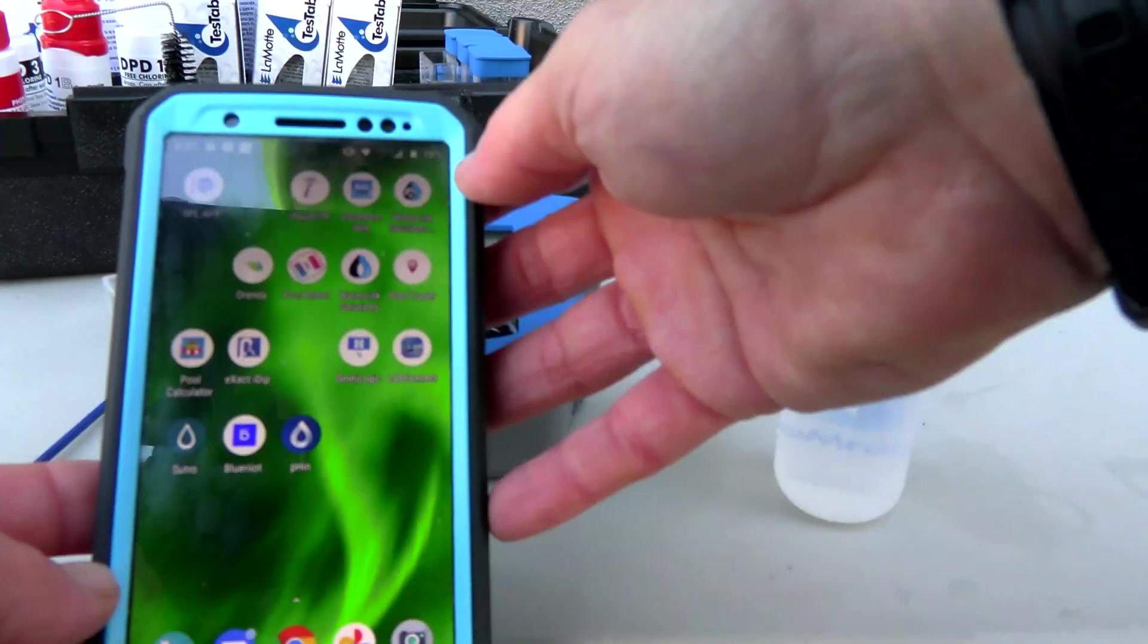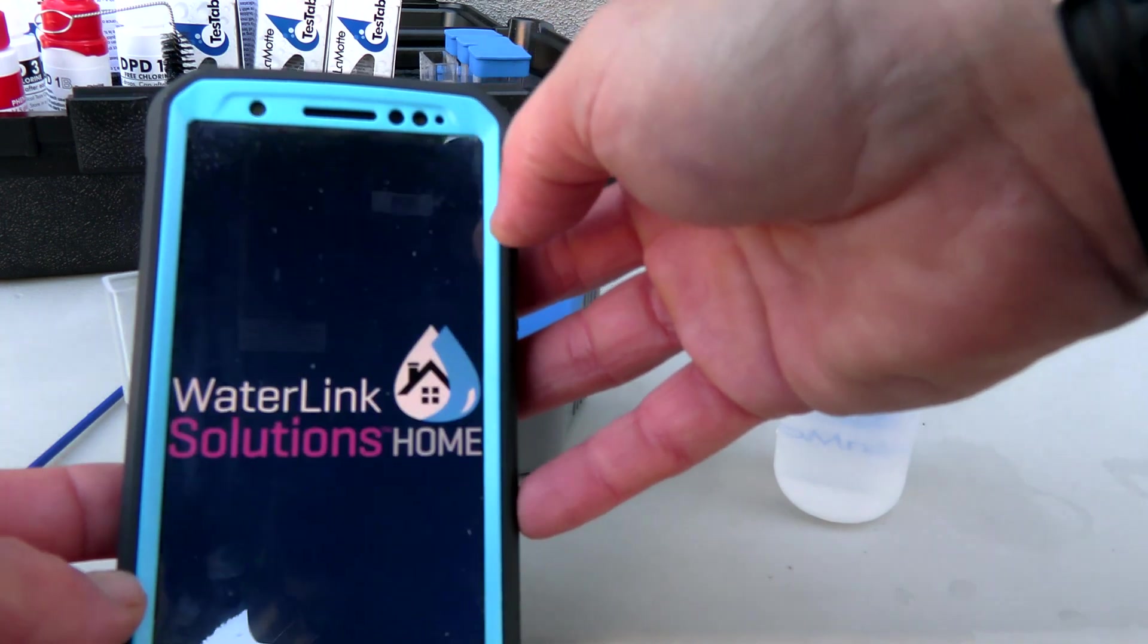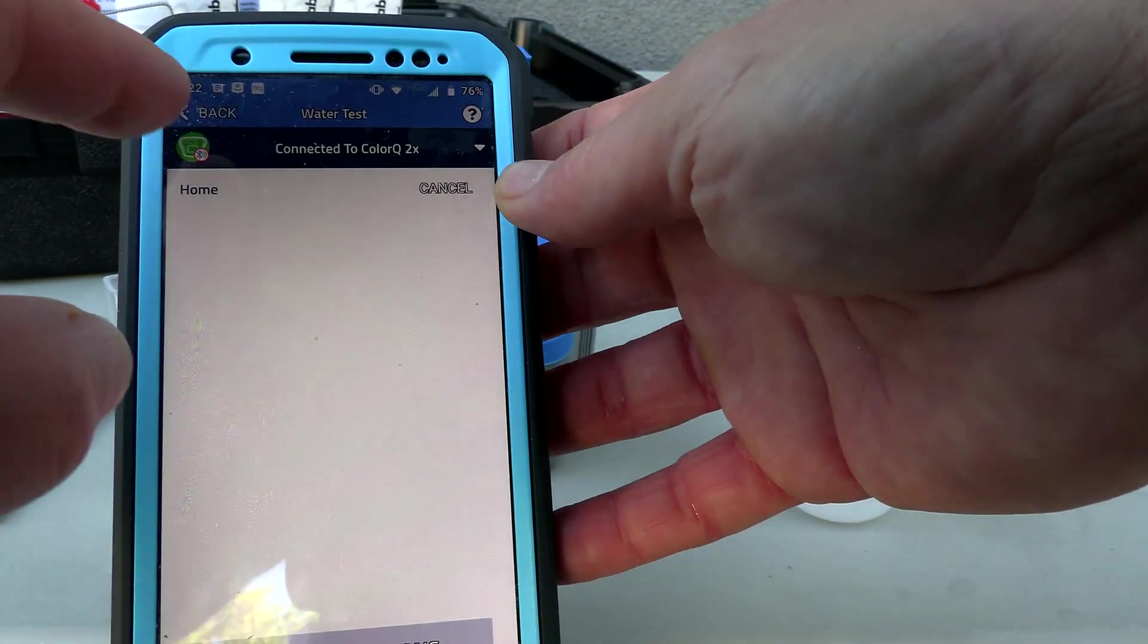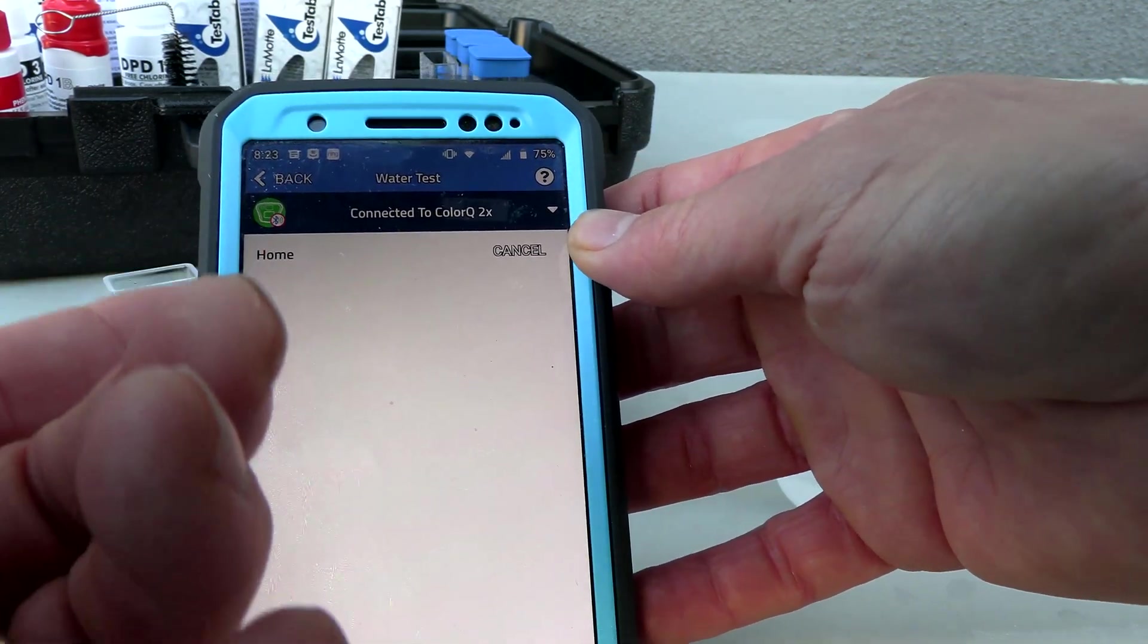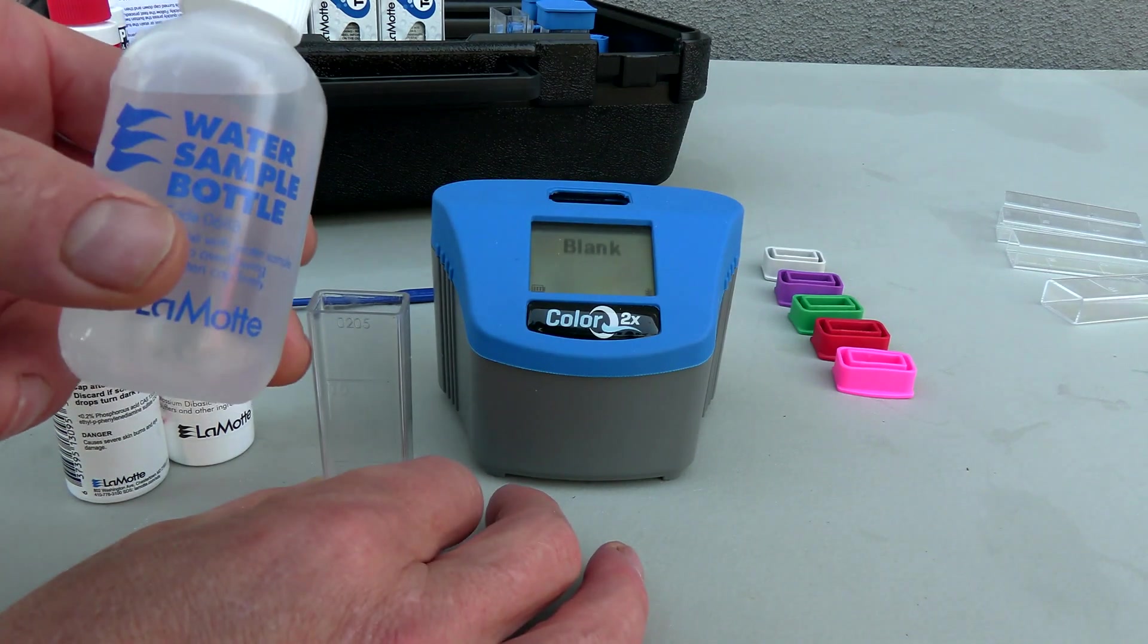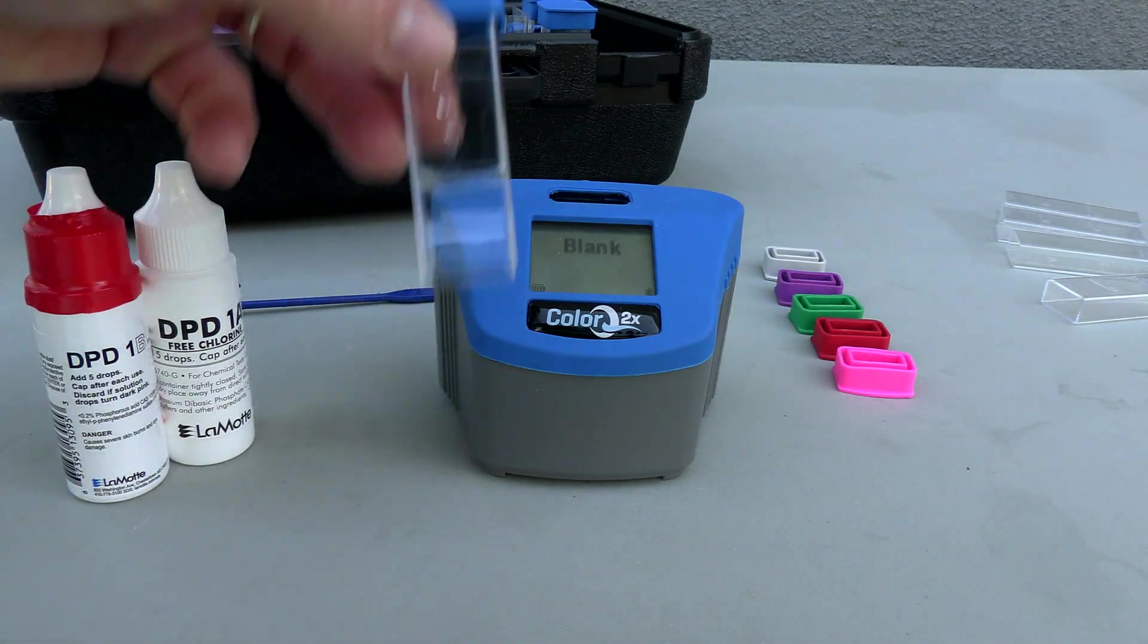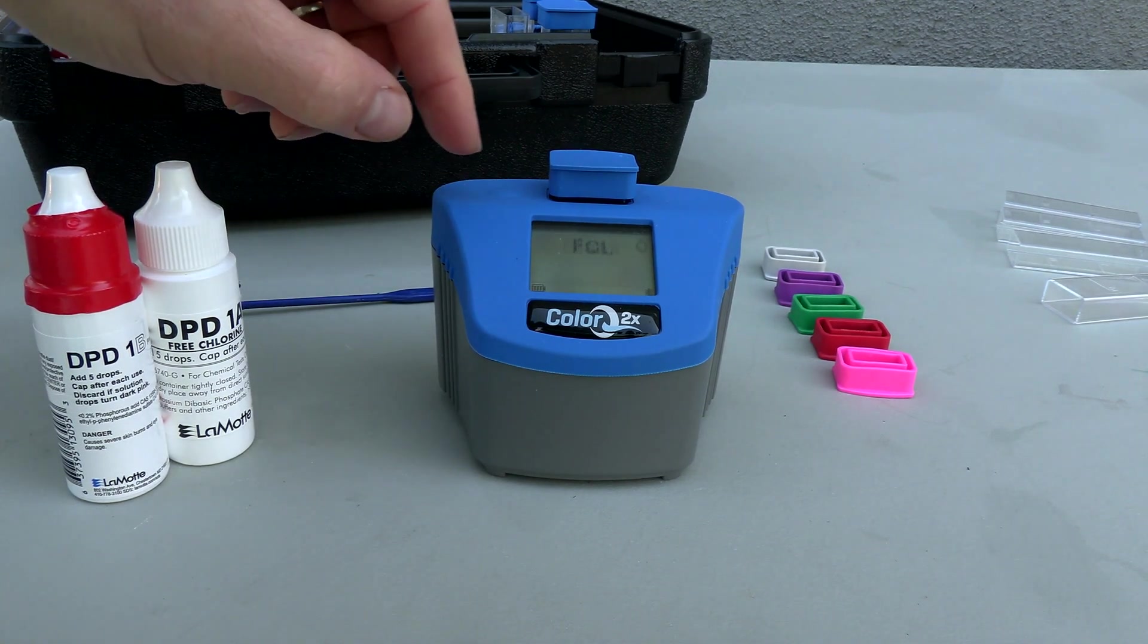First thing you want to do is turn on the unit. If you're going to connect it to the WaterLink Solutions Home or WaterLink Solutions Pro, go ahead and open the app and then connect to the Color Q2X. I'm connected, which means all the readings are going to be saved to the app here. The first thing I do is blank out the water sample. I have the water sample here from the pool. You want to fill it up to the 5 ml line. We're going to put the cap on, hit the power button on top, and that'll blank it out. This is also the enter button.